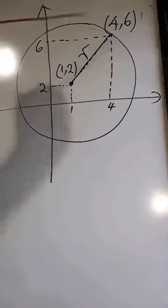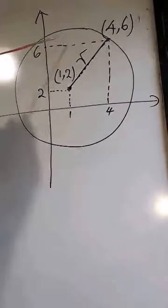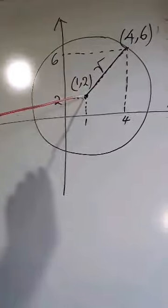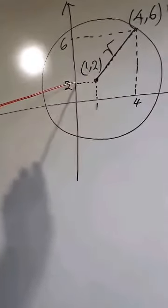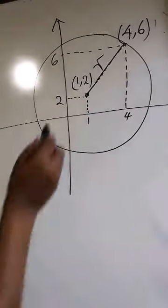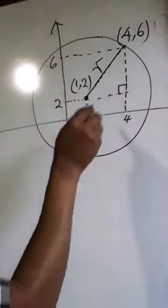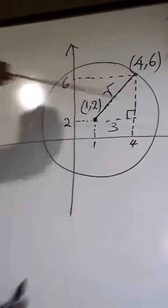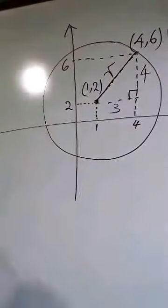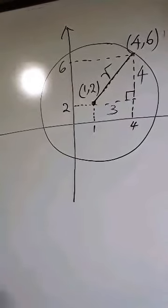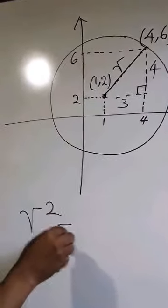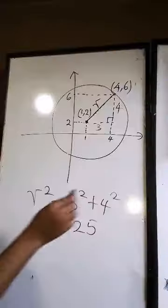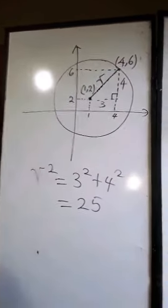We apply the Pythagorean theorem. At point (4, 6), the x-ordinate is 4 and the y-ordinate is 6. At center (1, 2), the x-ordinate is 1 and the y-ordinate is 2. This gives a Pythagorean triangle with x-displacement 4 minus 1 equals 3, and y-displacement 6 minus 2 equals 4. So r squared equals 3 squared plus 4 squared, which again gives us 25.